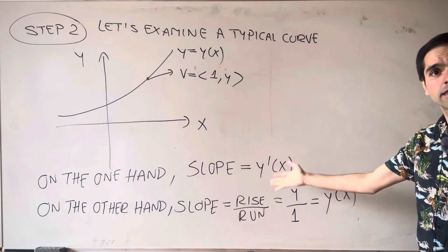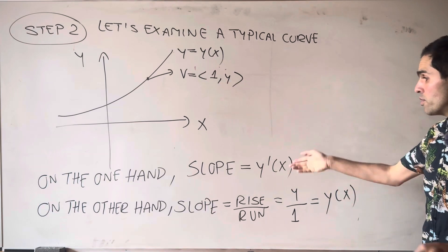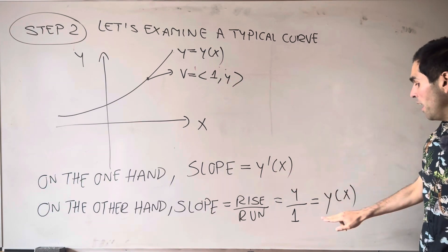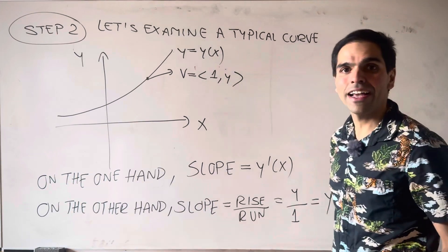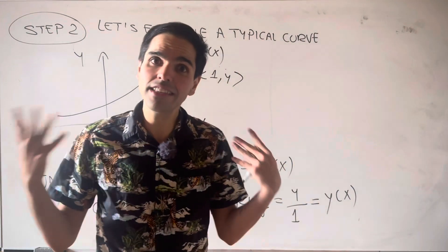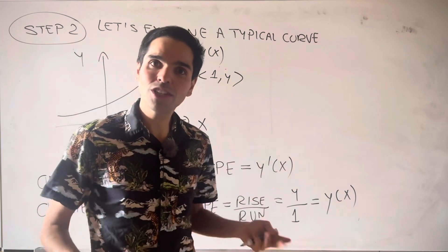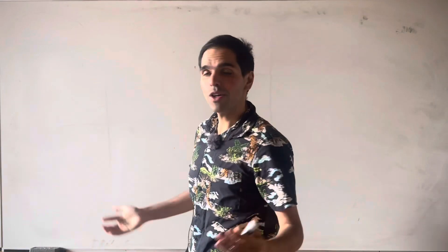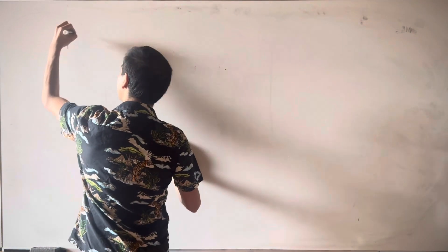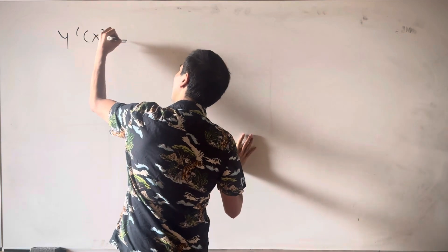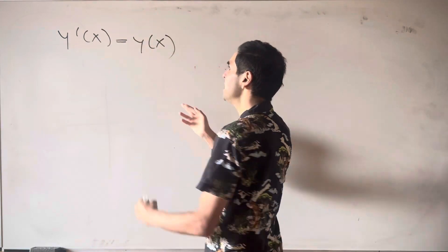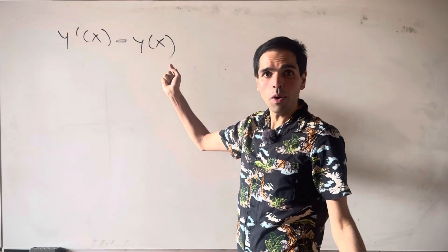So in other words, equating this, what is the slope? It's y prime, but it also equals y. And what it gives us is a differential equation for y, which we can now solve. So what we now have is something called a characteristic equation, or characteristic ODE, which is y prime equals y.